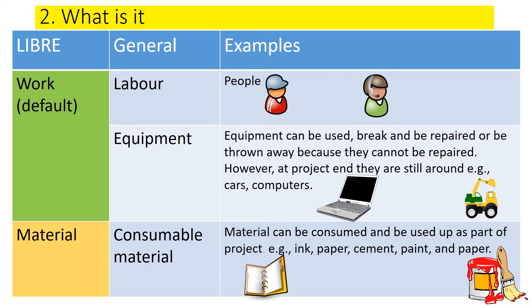The second type that also falls under the work resource is equipment. Equipment are things that can be used and can be broken during the project. If they break down, they can be repaired or even thrown away, but essentially at the end of the project they can still be around in physical format. For example, cars, computers, etc. — you don't use them up.